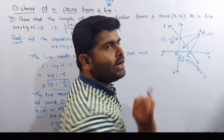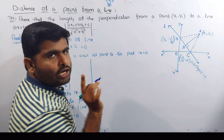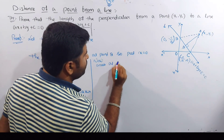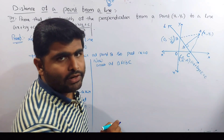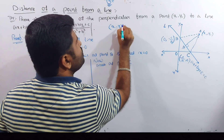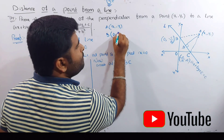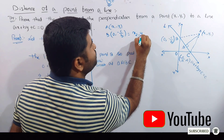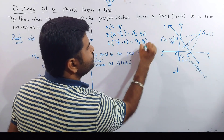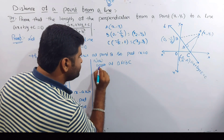So we will find points A, B, and C and form a triangle. In this condition, we look at the area of triangle ABC. We have coordinates: the given point is x1, y1; the y-intercept B is 0, minus c by b; and the x-intercept C is minus c by a, 0. This is the area of triangle formula: half into x1 times y2 minus y3.